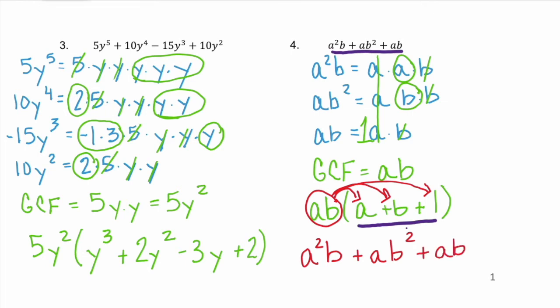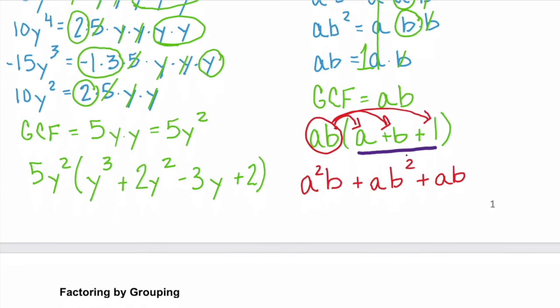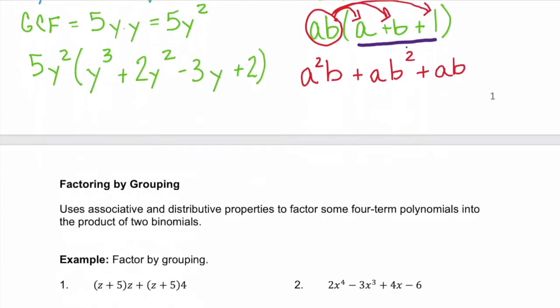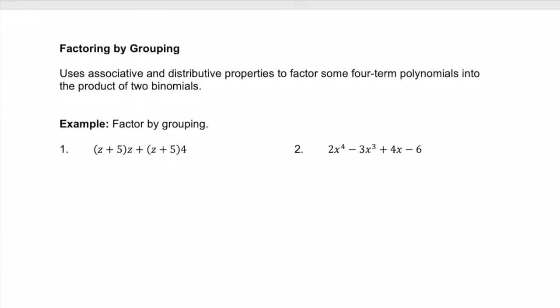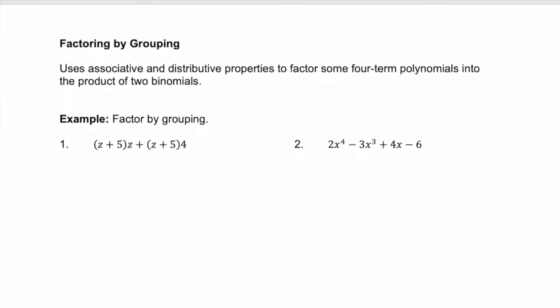Math is great because you can always check your answer. So when you factor, always use the distributive property and check your answer. Now that we've mastered GCFs, let's move on to factoring by grouping. Factoring by grouping uses the associative and the distributive properties to factor 4-term polynomials into the product of 2 binomials.